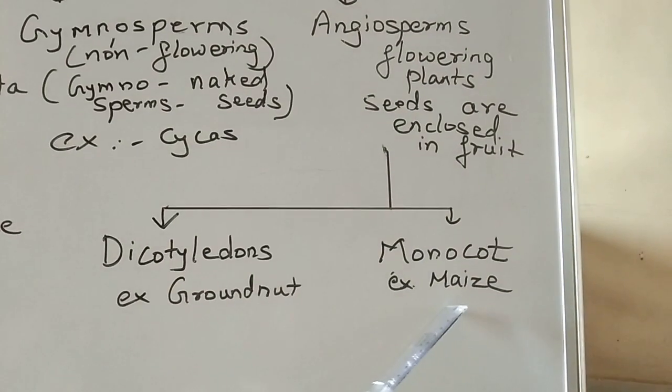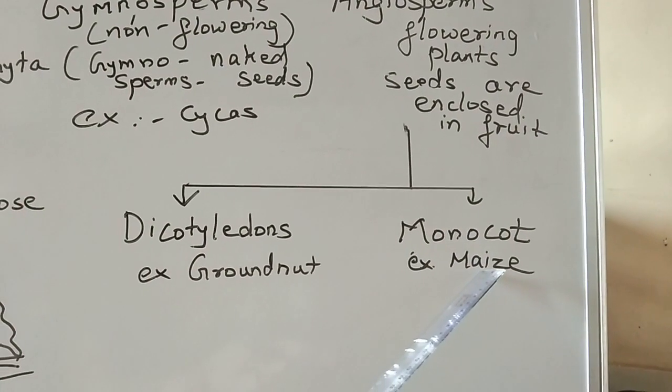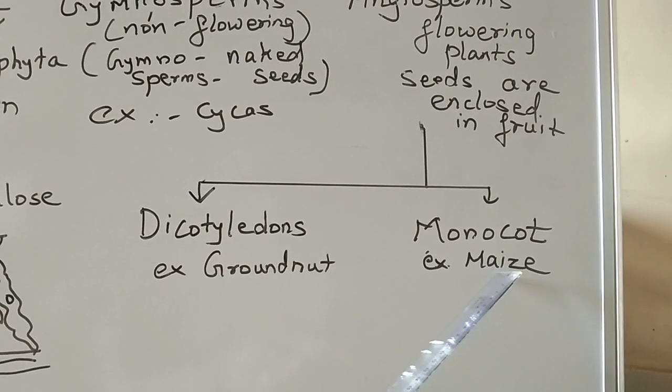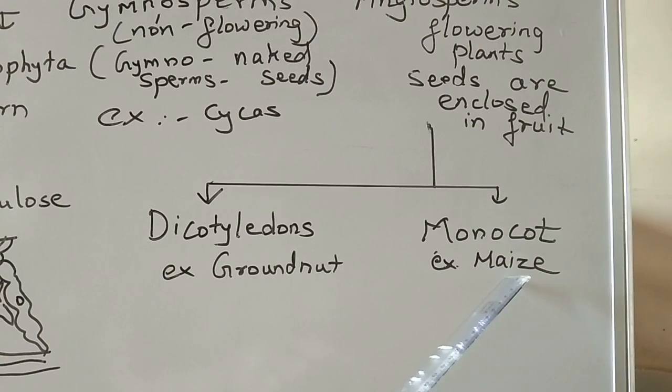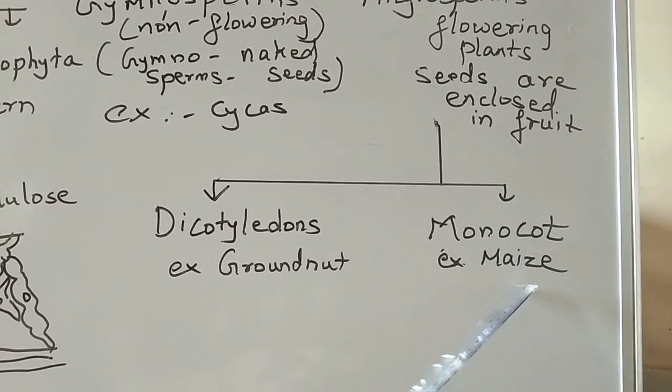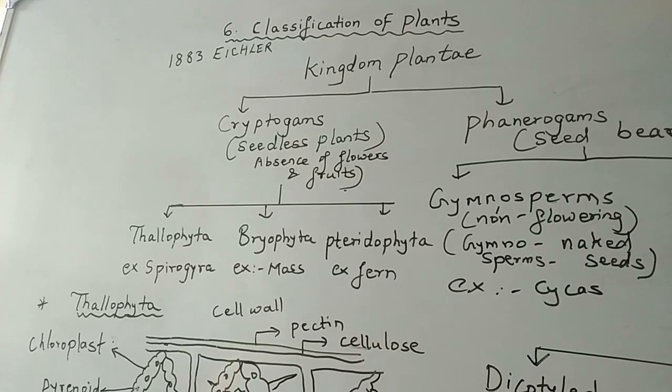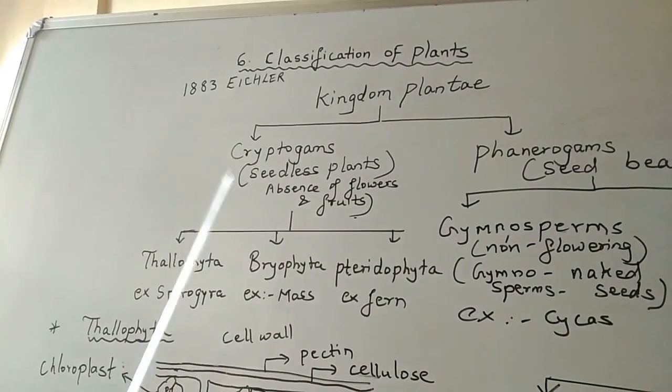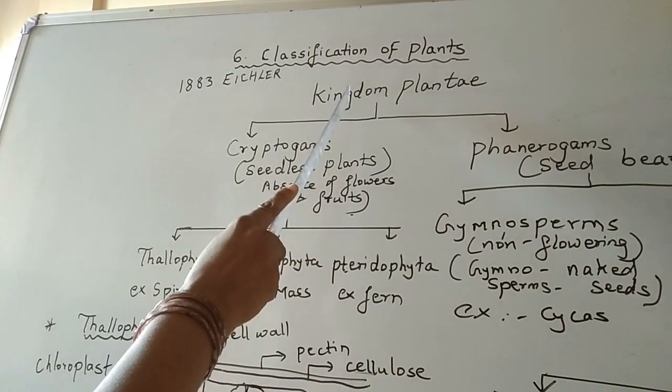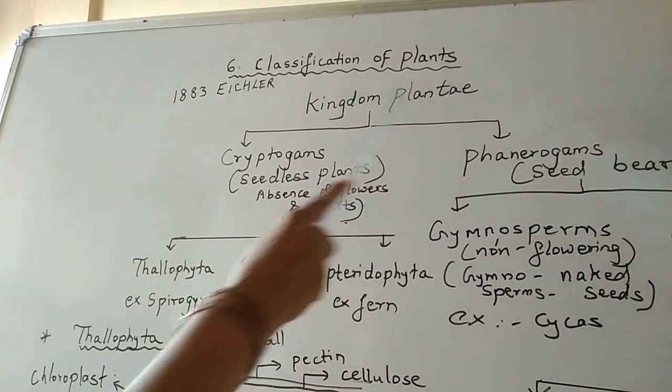Similarly, in monocot, if you take an example of maize, if you apply pressure on maize, it will not be broken up. That means it is having a single cotyledon in it, so it will come under monocot. Today we have studied about the classification of kingdom plantae.